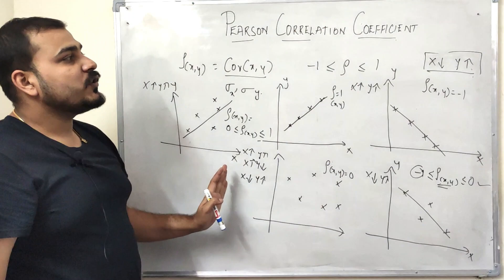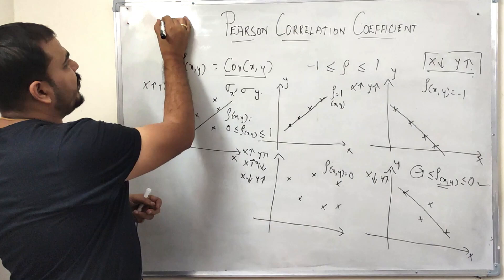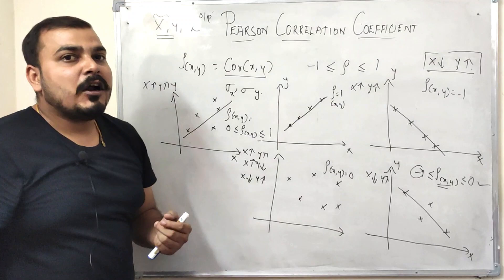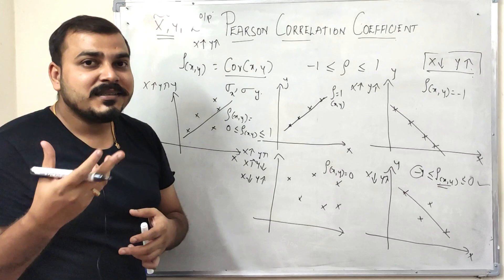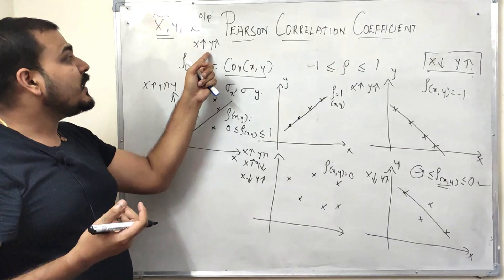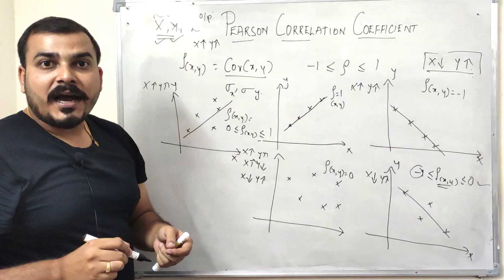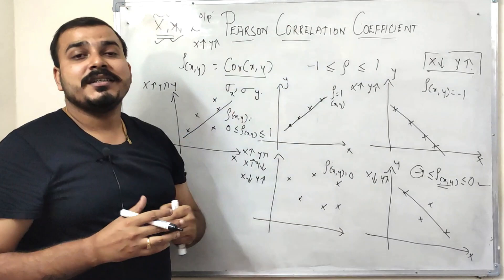This technique is used in feature selection. Suppose I have independent features X and Z, and dependent feature Y. If the correlation between X and Y is 1, it means when X increases Y also increases — these two features are essentially the same. In that case, I can drop one of the features and use only one, then apply the machine learning algorithm. This is how important correlation is for feature selection.